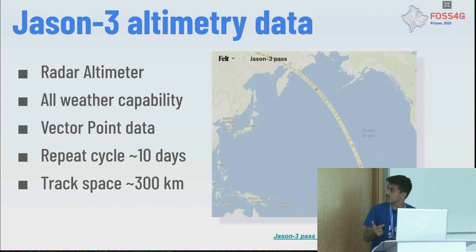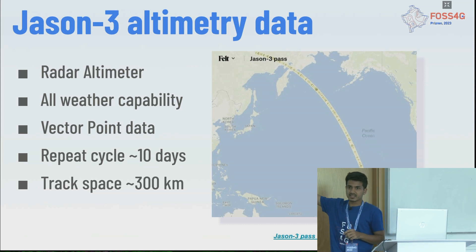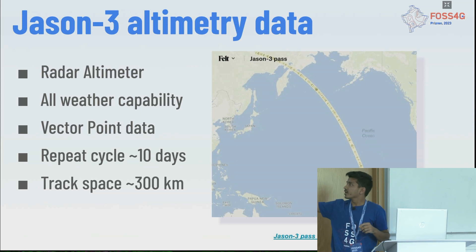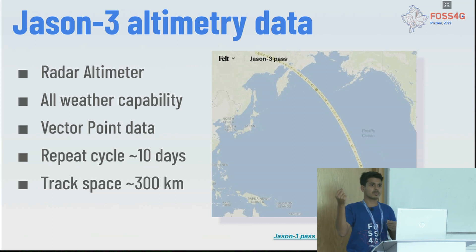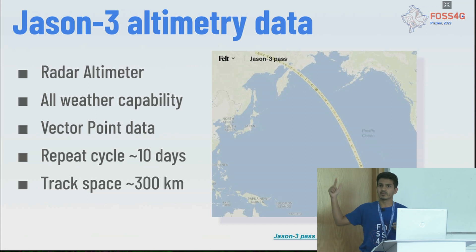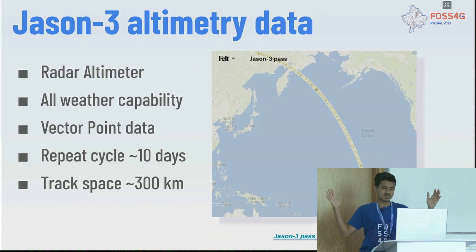Looking at the image on the right, this is the path that the altimeter covers. This is one specific mission from NASA which is JASON-3 — it covers vector points and vector spacing across the entire Earth. It repeats at least every 10 days, and the track spacing is quite large at 300 meters.